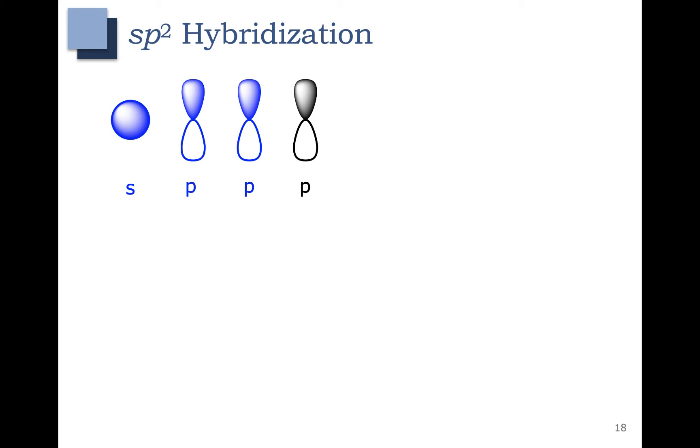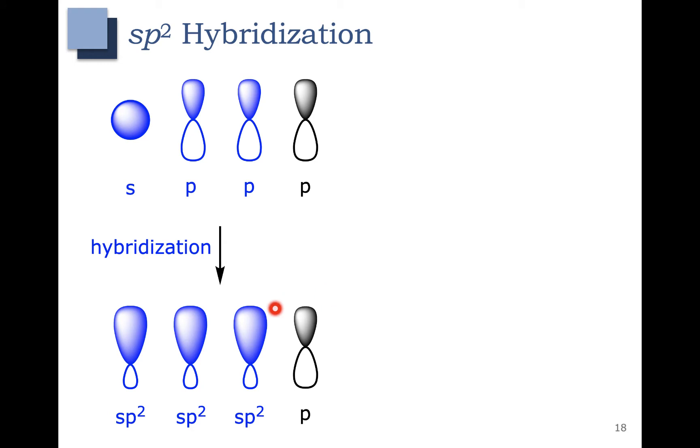In sp2 hybridization, we're going to take those same orbitals. Here we have an s orbital and here are three p orbitals. But instead in sp2 hybridization, only the three that I have in blue are going to mix and combine and hybridize. So what ends up happening is that one p orbital over here is unused.